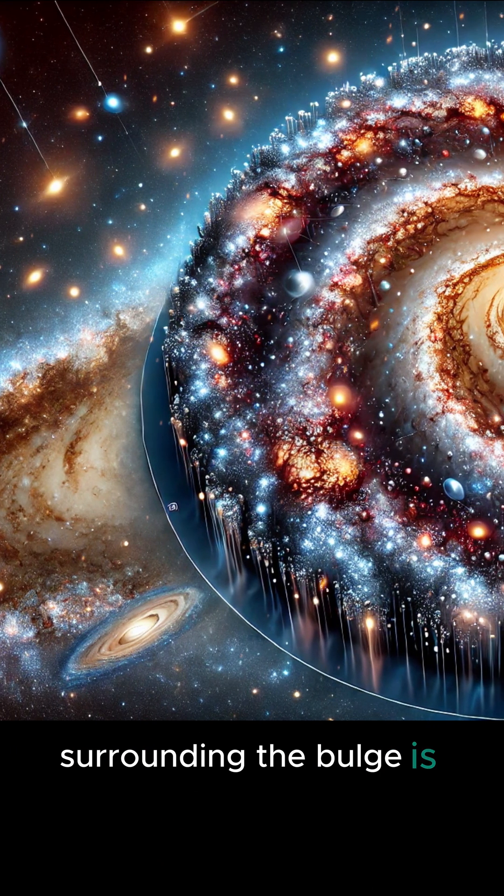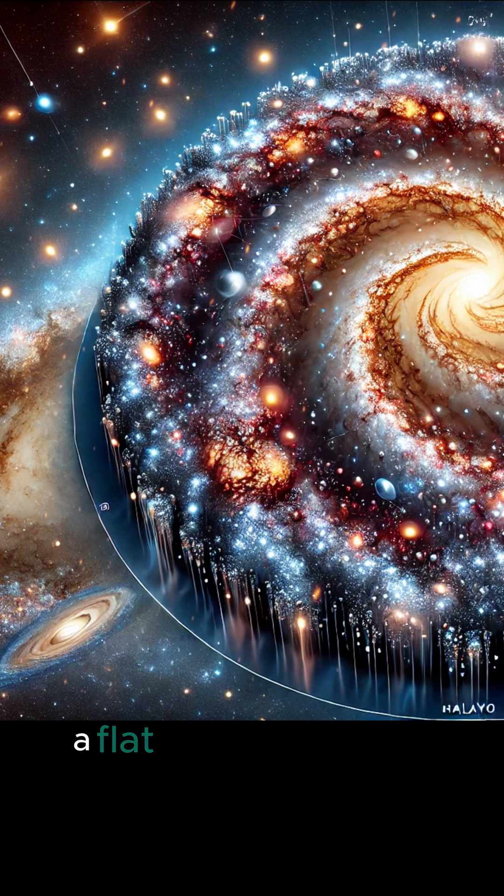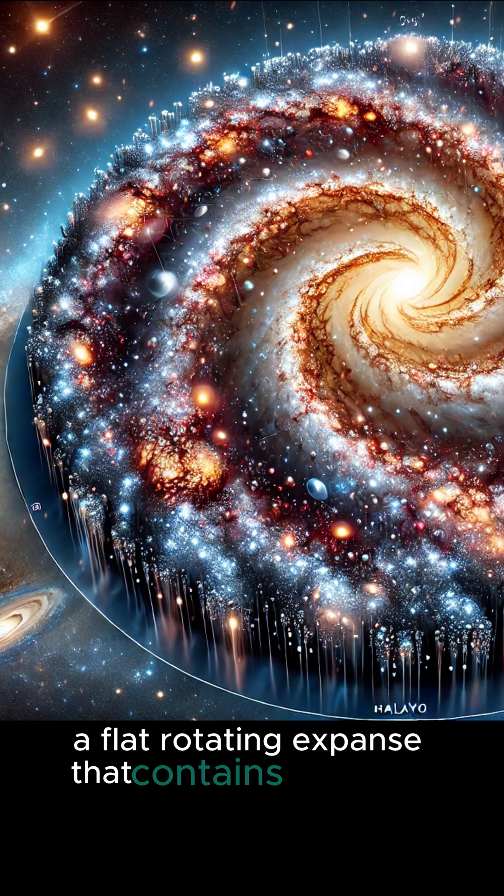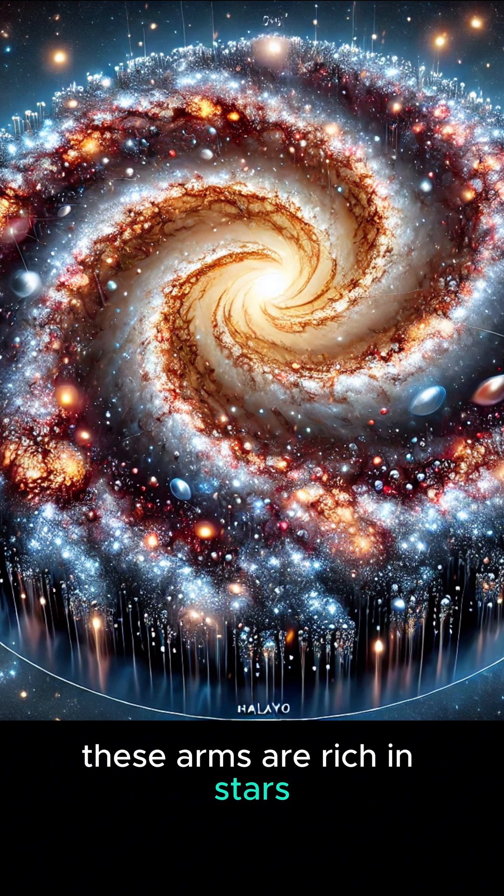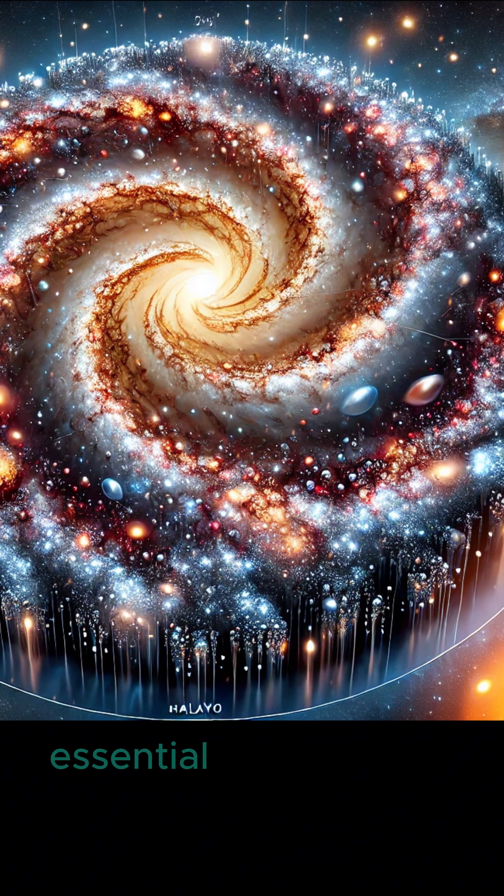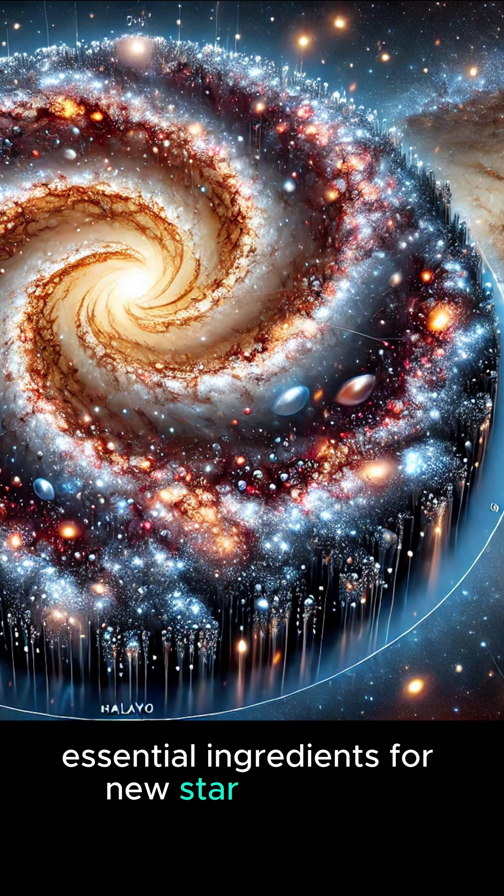Surrounding the bulge is the galactic disk, a flat rotating expanse that contains the spiral arms. These arms are rich in stars, gas, and dust—essential ingredients for new star formation.